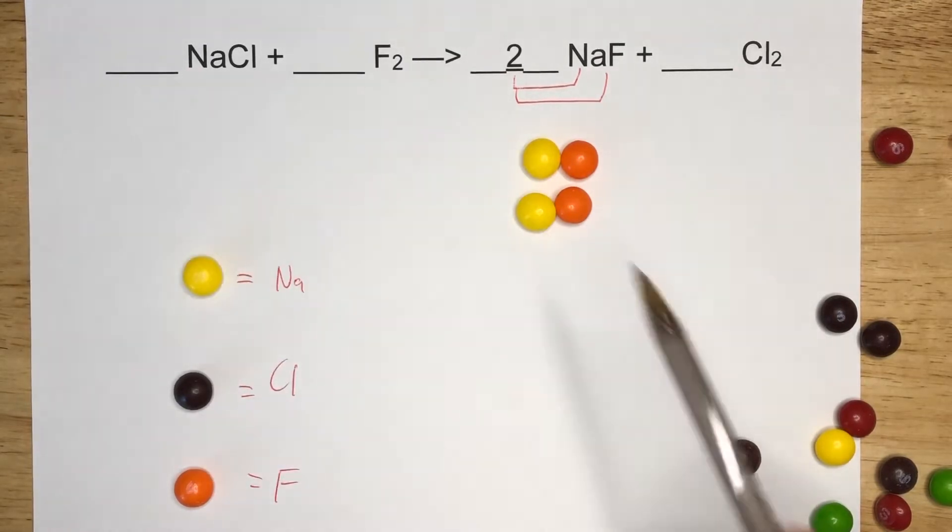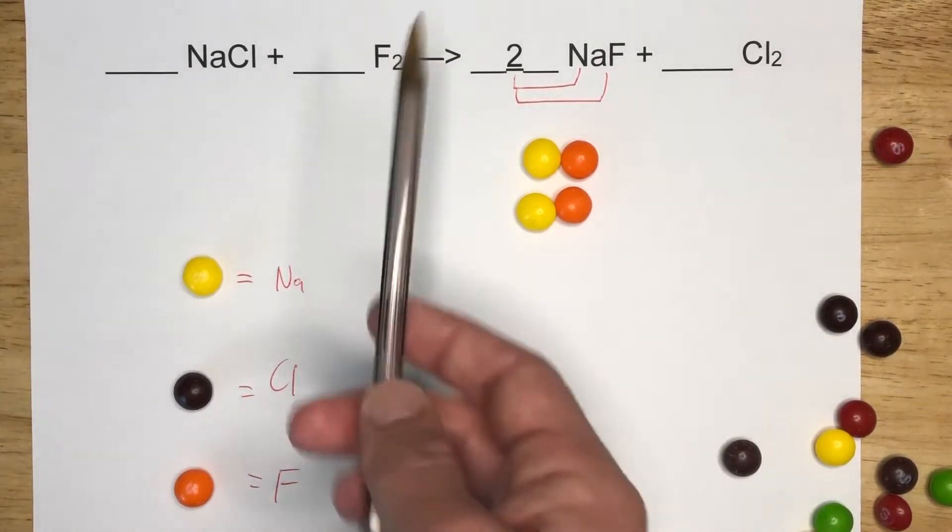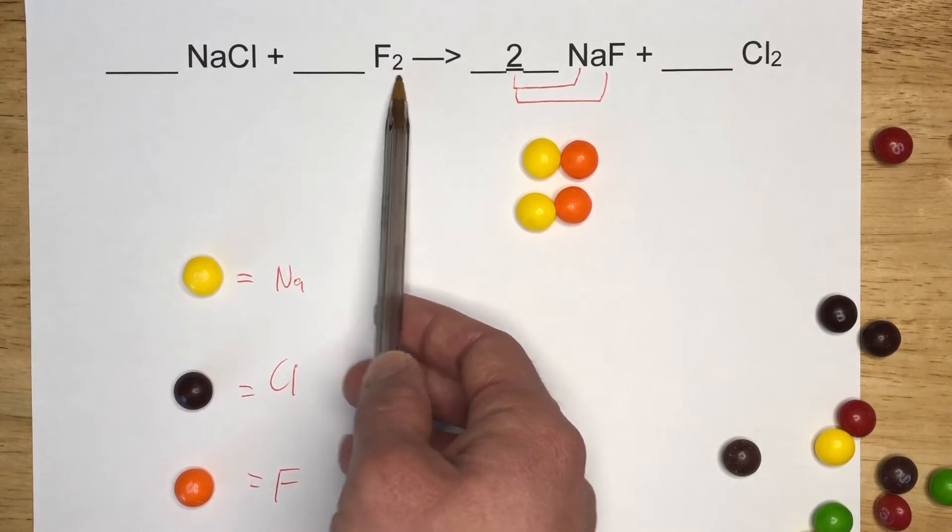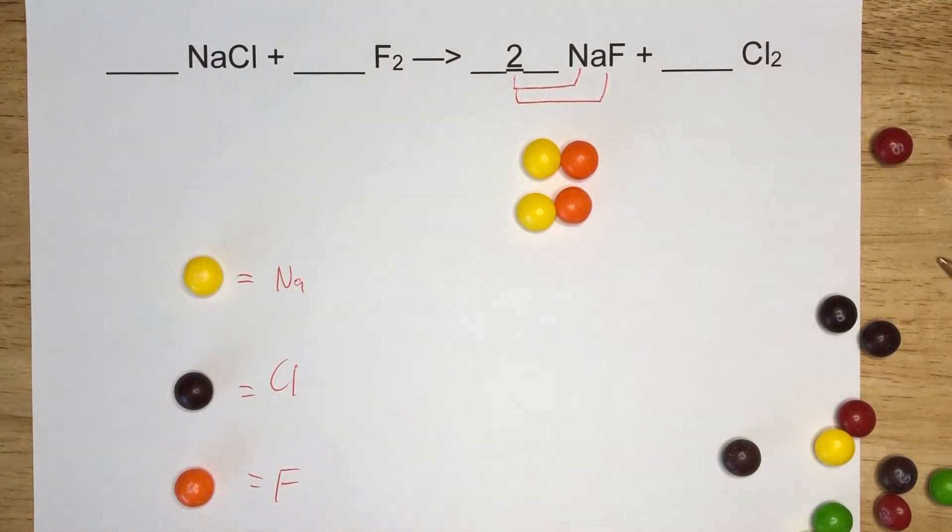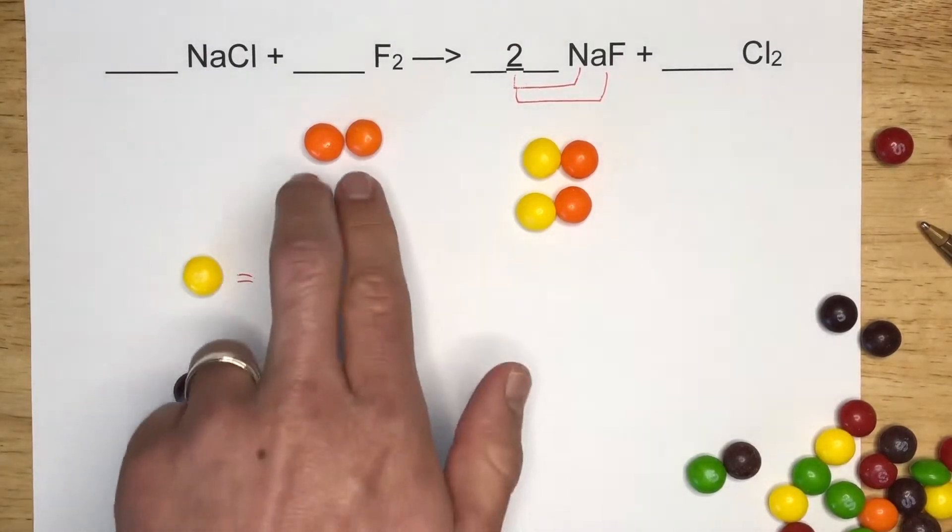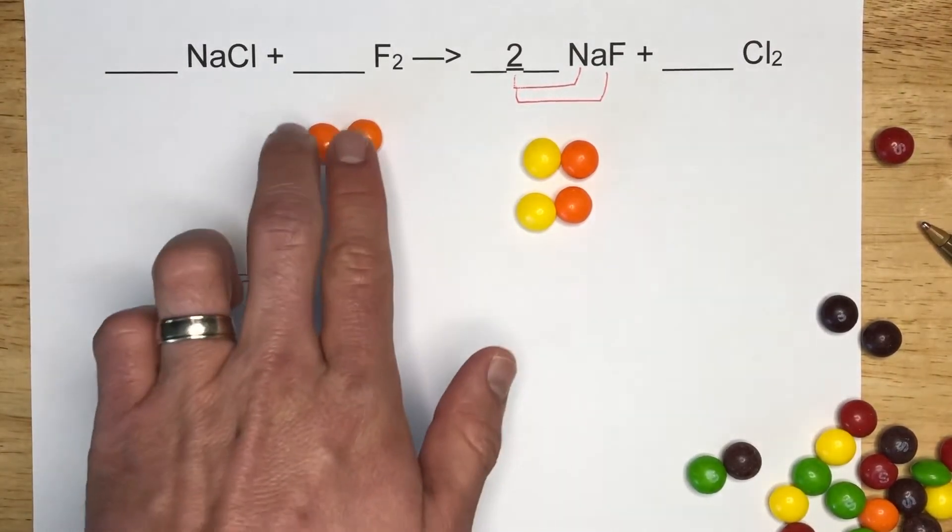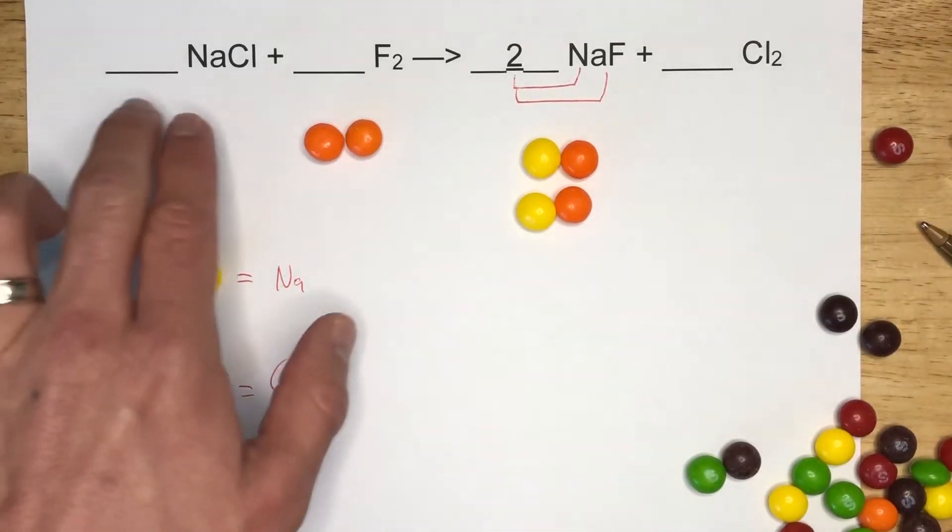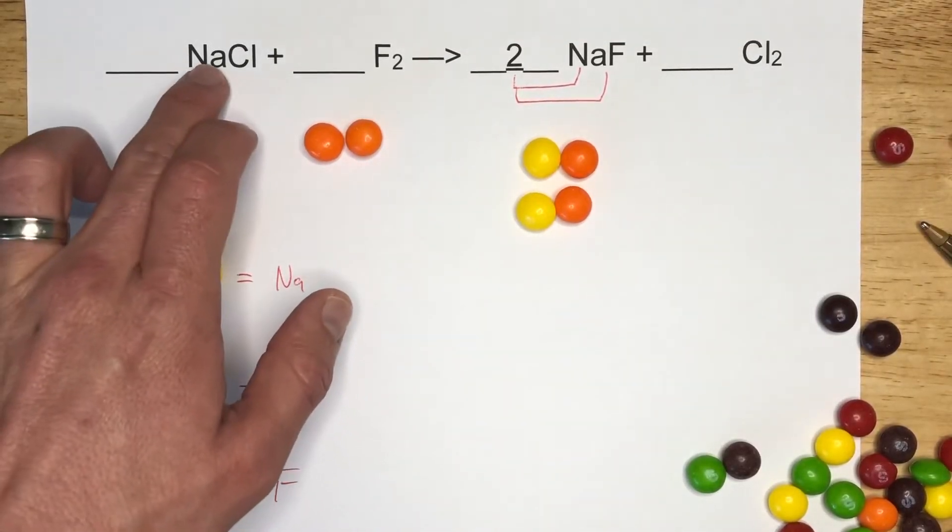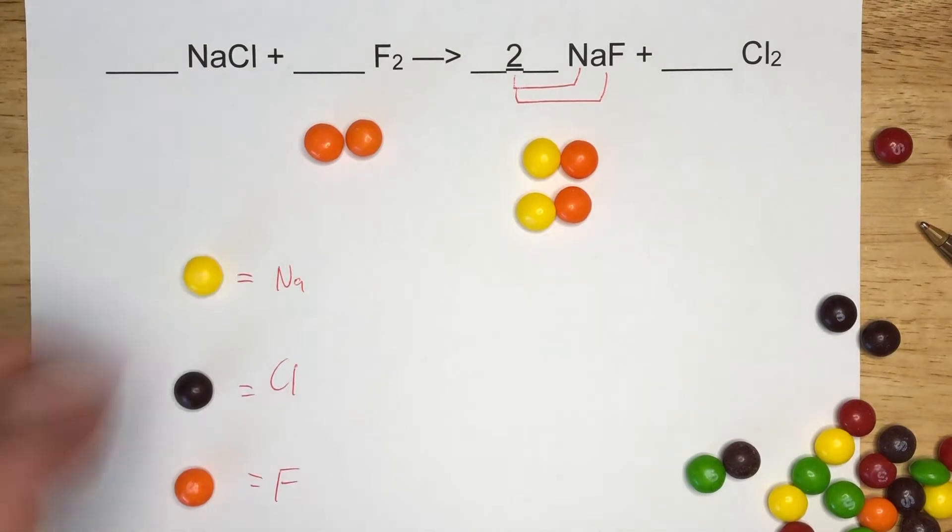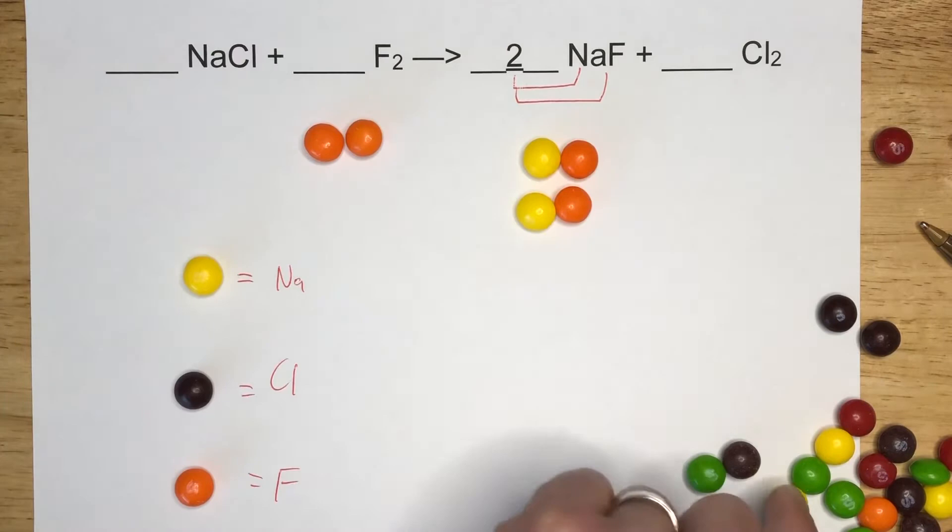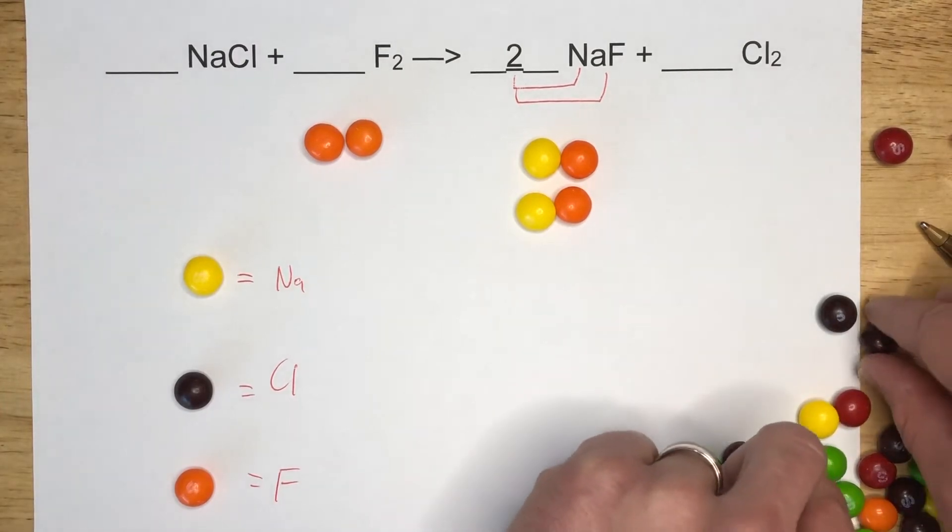I see two F's here. The little two means that it's a molecule of F2. There's two F's on the left, two F's on the right. Now let's look at Na and Cl on the left hand side. There's no numbers next to the Na and the Cl, so that means the compound NaCl has one atom of Na and one atom of Cl. One compound of this would look like that.